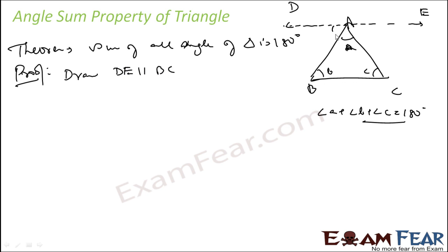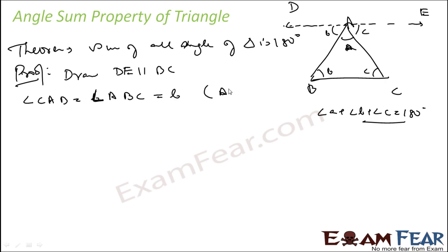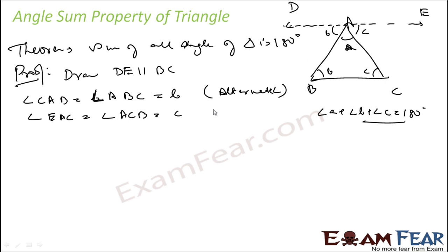Now if this angle is B, this angle is also B. This is C, this is also C. Angle DAB is equal to angle ABC, which equals B. Why? Alternate angle. Similarly, angle EAC is equal to angle ACB, which equals C.